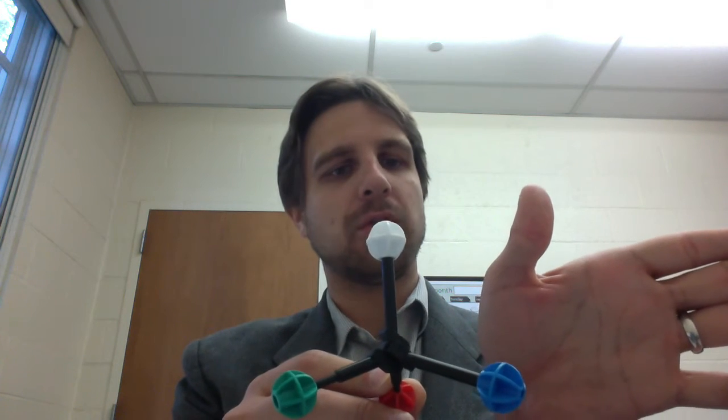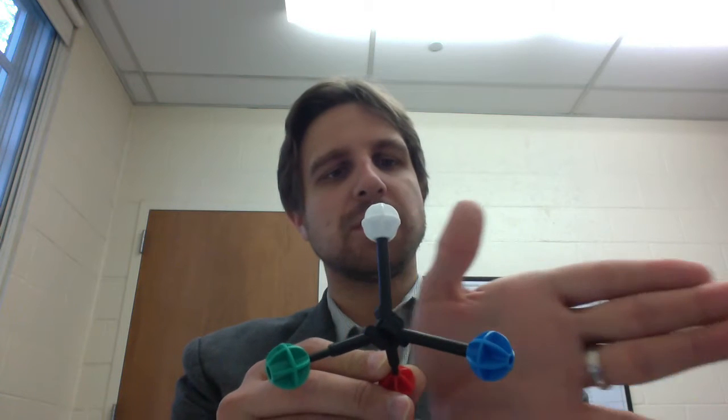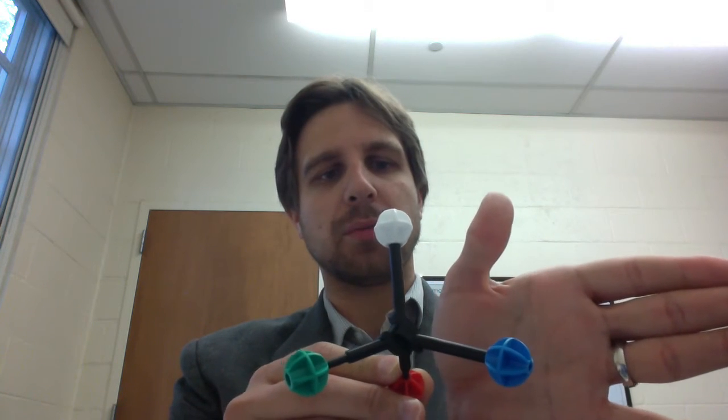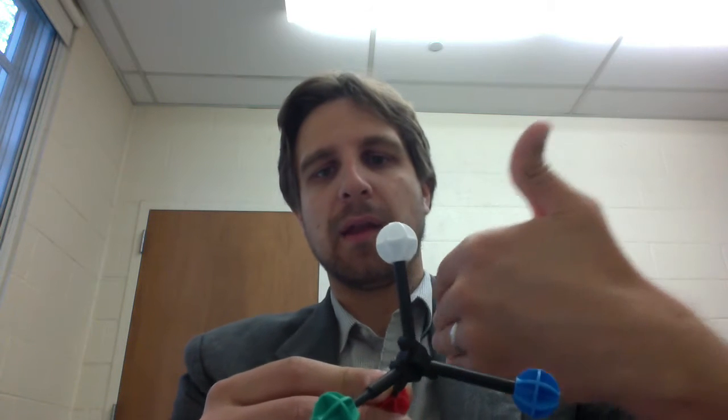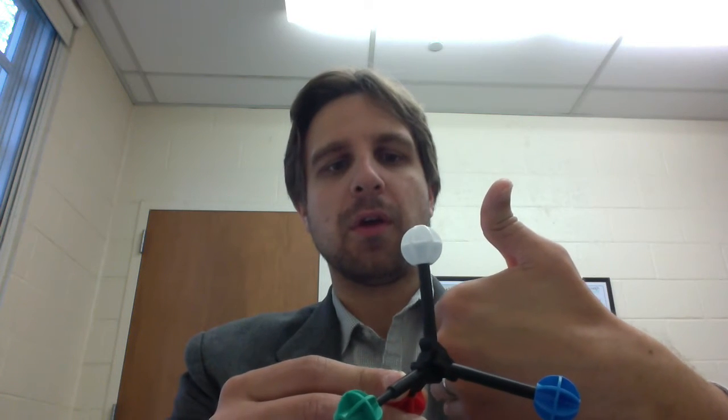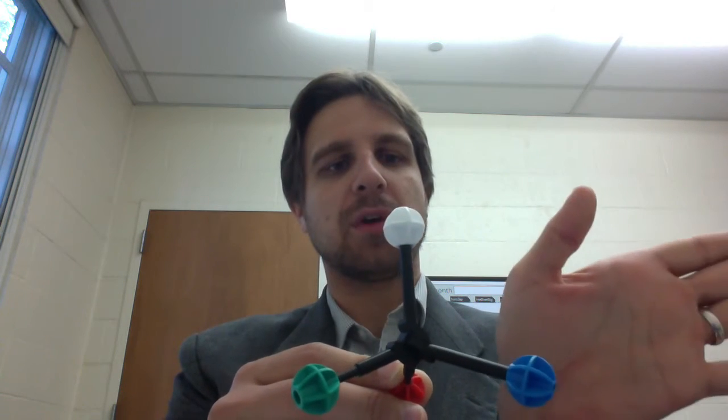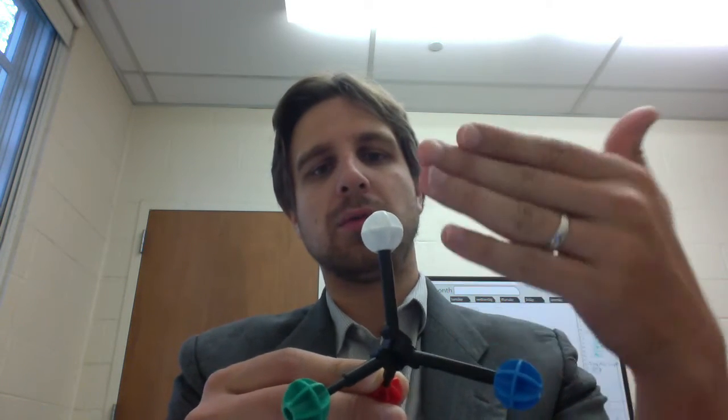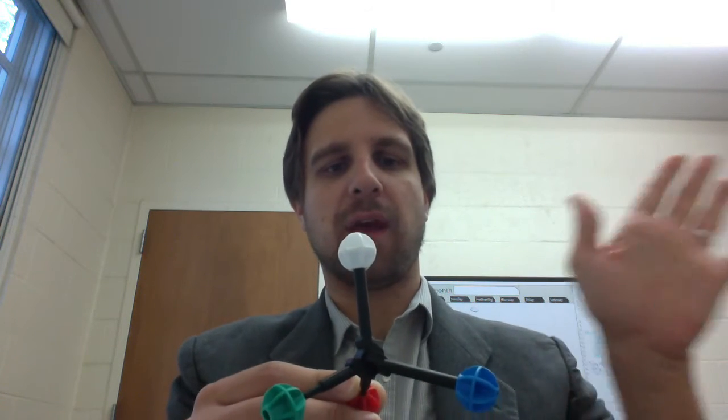And then what you do is you close your hand inwards, starting from the priority 1 group to the priority 2 group and ending on the priority 3 group. We can see that this molecule here, if we use our left hand, we go from 1 to 2 to 3. That defines that this would be the S enantiomer.